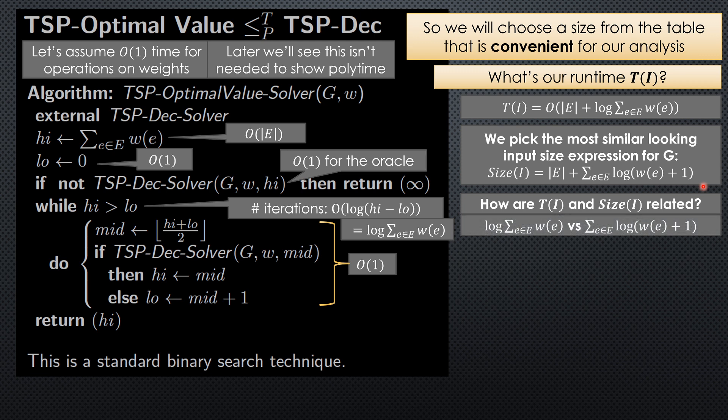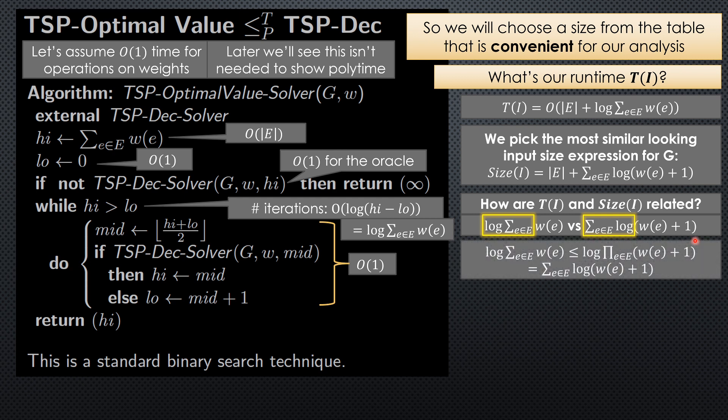So how are T(i) and size(i) related? Well, we're comparing T(i), which has this log of sum of weights, to size(i), which has the sum of log of weight plus 1s. And our logs are in the wrong place. So we have log sum and we have sum log. So how do we relate these two? Well, log sum of weights is going to be less than or equal to log product of weight plus 1s. Why?